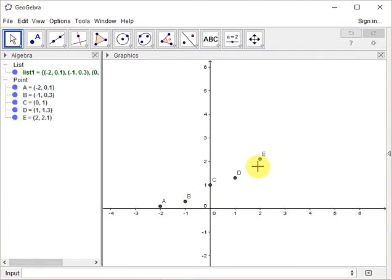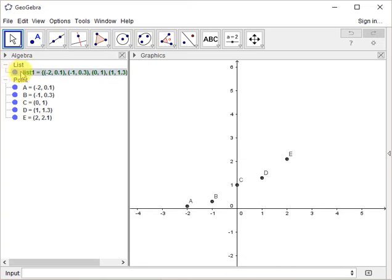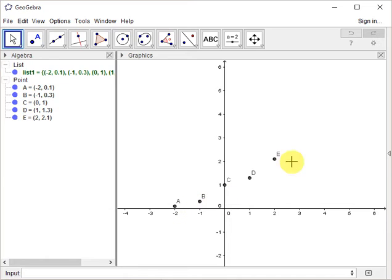So you have a set of points appearing over here. And you can also see the points here in the algebra window. What you can also see is a list of points called list 1 here. So now we want to analyze the data here. This is some sort of data set, and we want to make the line of best fit. It could be a linear, or it could be an exponential as well, perhaps.